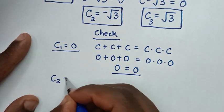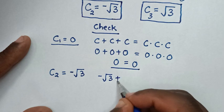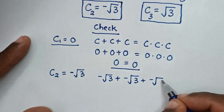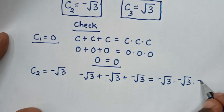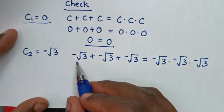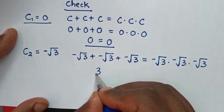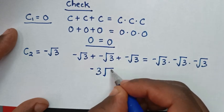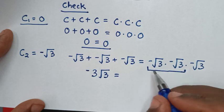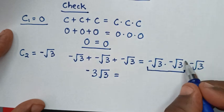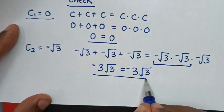Now let's check the second value c equals negative √3. On the left side: (−√3) plus (−√3) plus (−√3) equals 3 times (−√3), which is −3√3. On the right side: (−√3) times (−√3) times (−√3) — the first two give positive 3, then times (−√3) gives −3√3. Left side and right side are equal, so it is true for c equals negative √3.